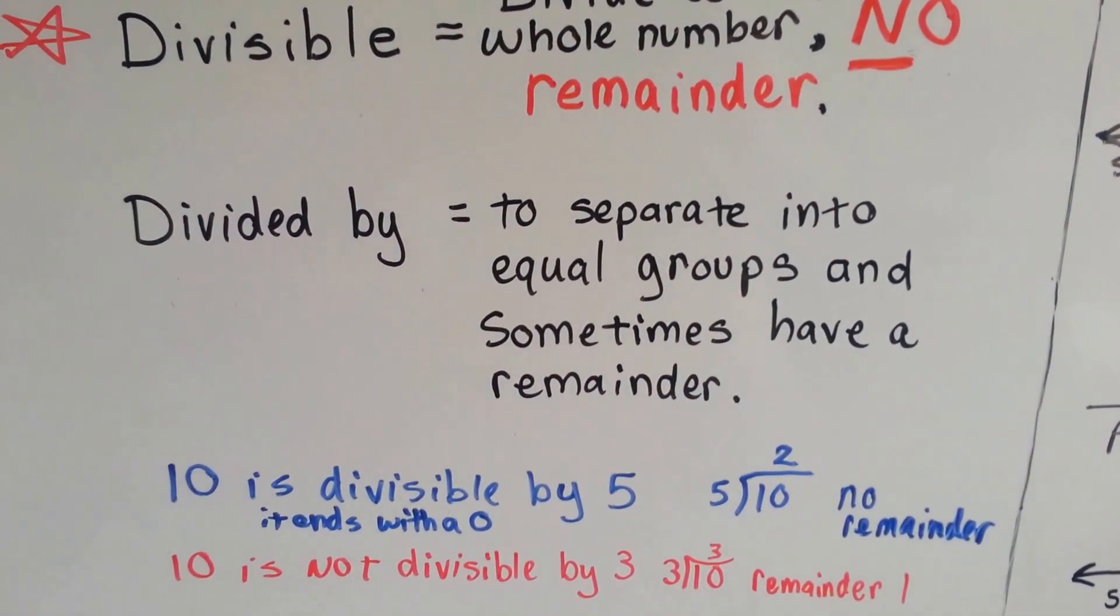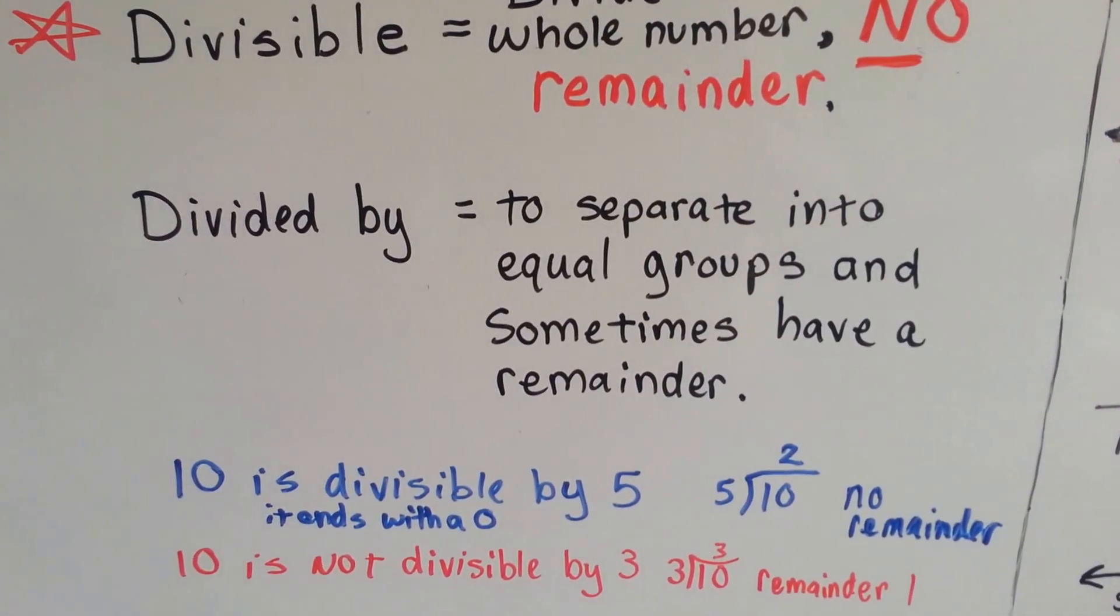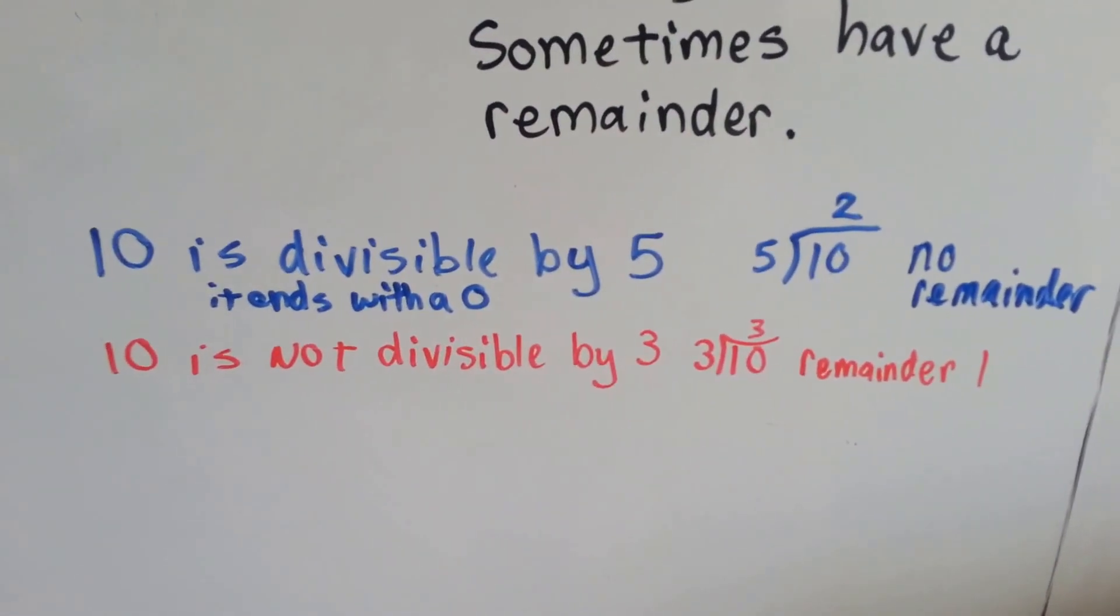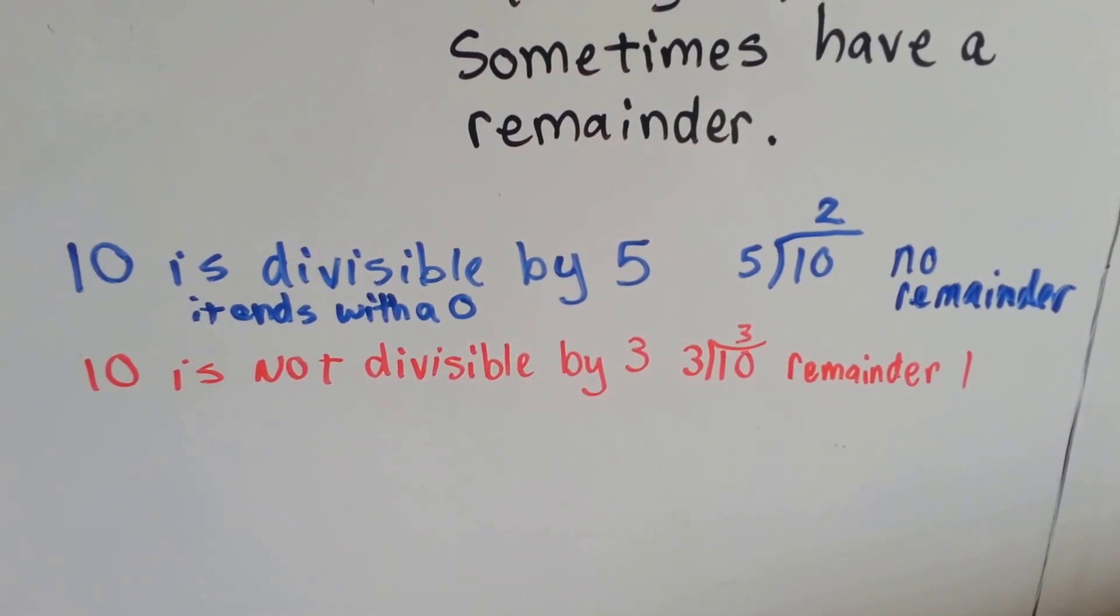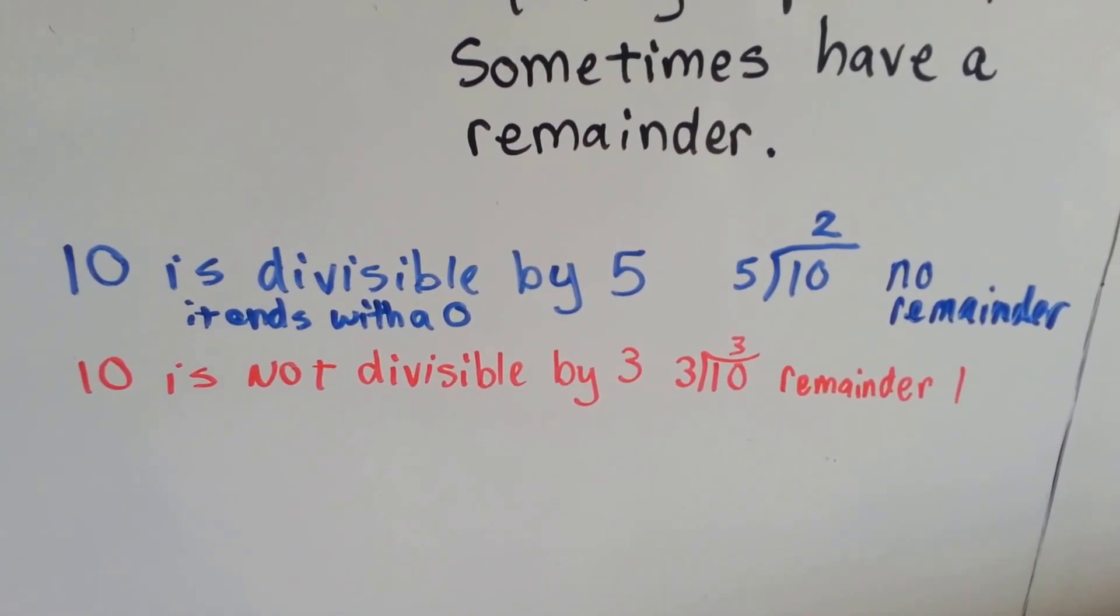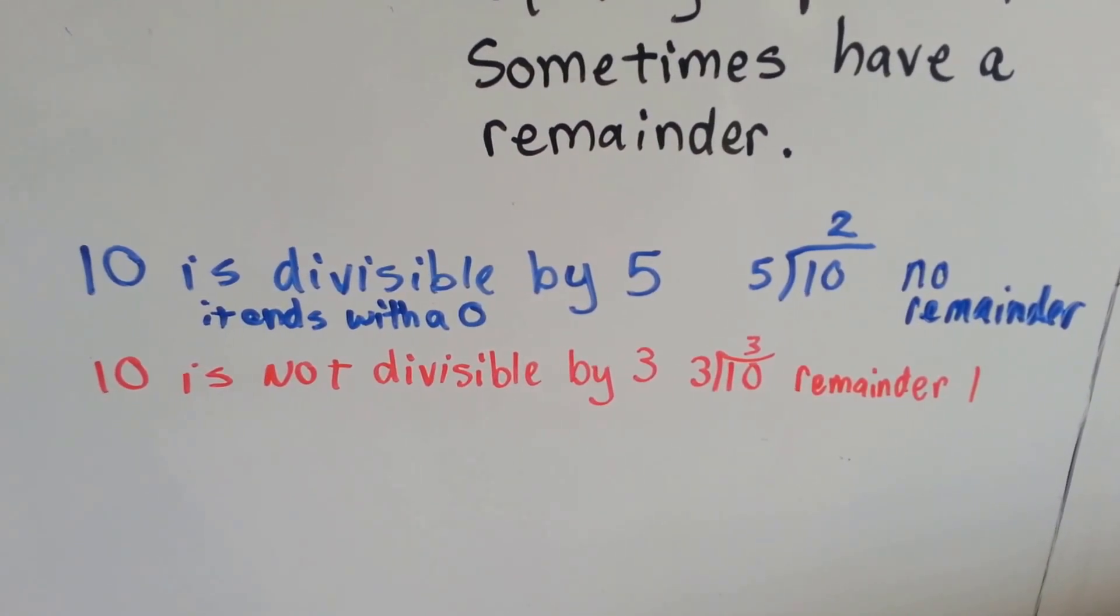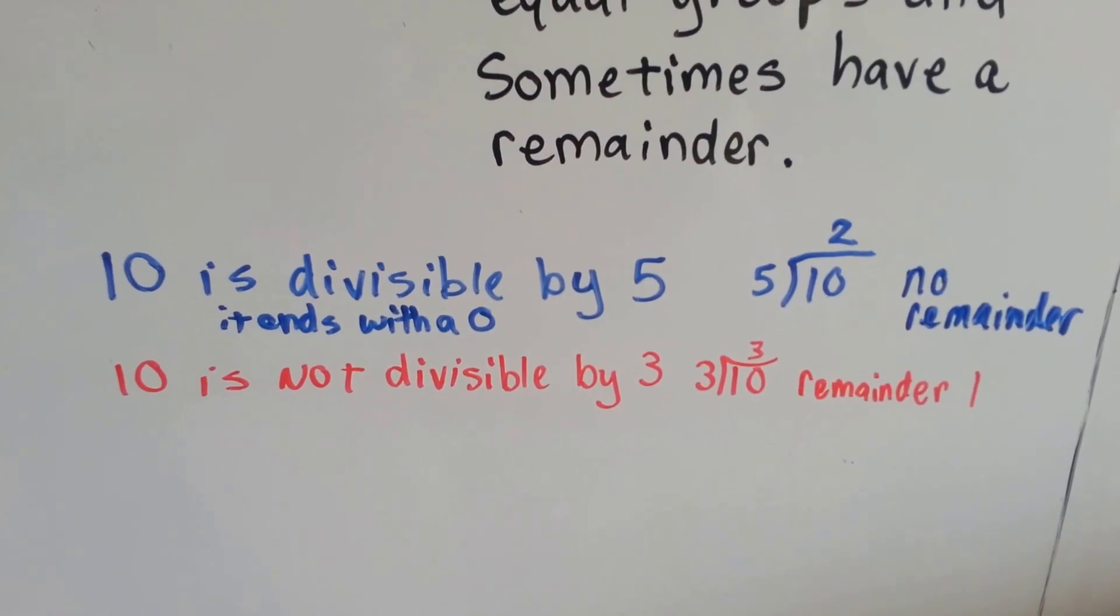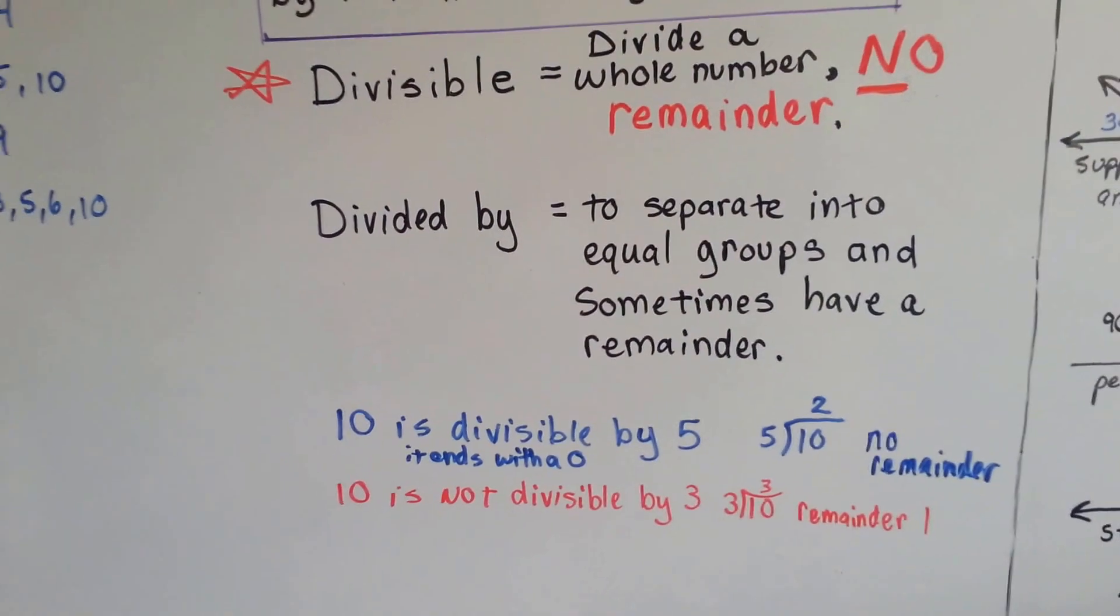Don't confuse it with divided by. Divided by means you're going to separate it into equal groups and you sometimes have a remainder. So look at this. 10 is divisible by 5 evenly with no remainder. It's not divisible by 3 because it goes in there 3 times with a remainder of 1. So it's not divisible by 3, it's divisible by 5 because it went in evenly. No fractions allowed and no decimals. It's got to be a whole number.